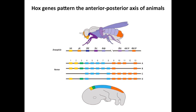Hox genes tend to be found in clusters in the genomes of animals, and changes to the exact number, sequence, and regulation of the Hox genes have clearly played an important role in the evolution of different body plans in animals, as we describe in Chapter 3. We can therefore make important insights into the evolution of animal body plans by tracing the evolution of Hox genes over time. We can search genome sequences for similarities to the Hox homeobox sequences as a way of identifying Hox genes in the genomes of animals that are around today.